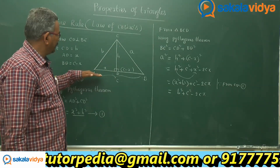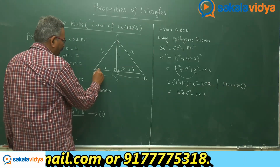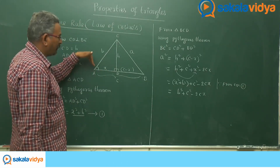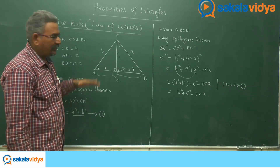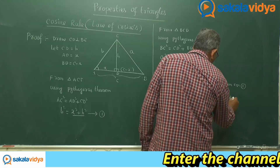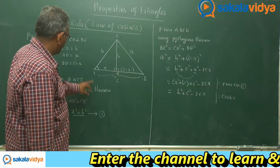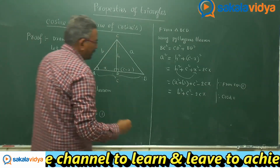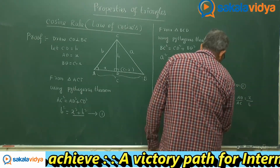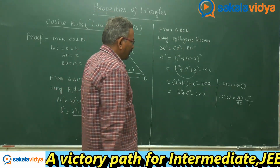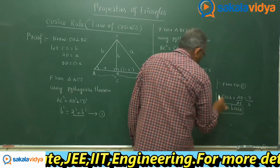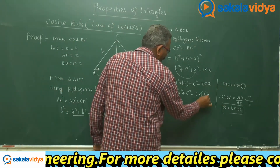Now let us find the relation between angle A, x, and b. For angle A in triangle ACD, x (which is AD) is the adjacent side and b (which is AC) is the hypotenuse. So cos A = AD/AC = x/b. Cross-multiplying gives x = b·cos A. This is a very important result.